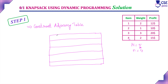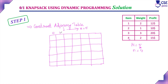The capacity is 5, so we add 6 columns: 0, 1, 2, 3, 4, 5. j represents the remaining capacity, and the maximum capacity is 5, so we consider capacity plus 1 columns, including the 0th column. i represents the objects; since 4 objects are given, we include n+1 rows: 0, 1, 2, 3, 4. This is the initial adjacency table.